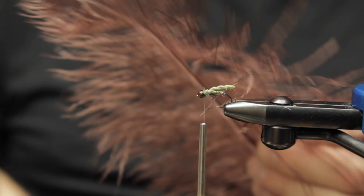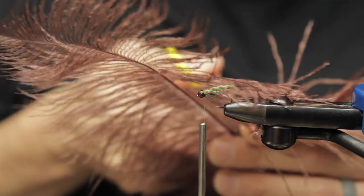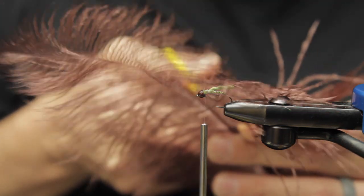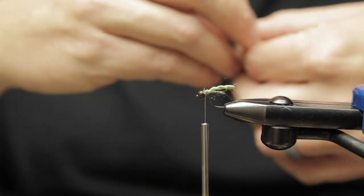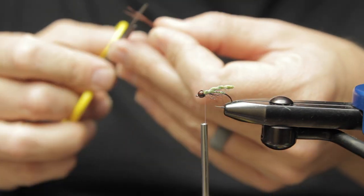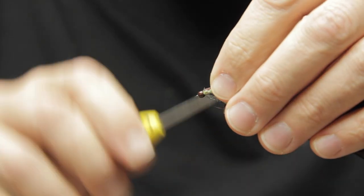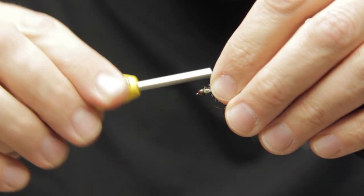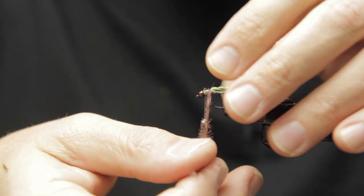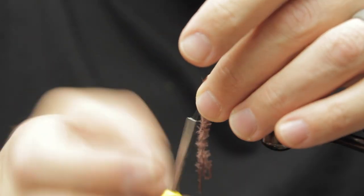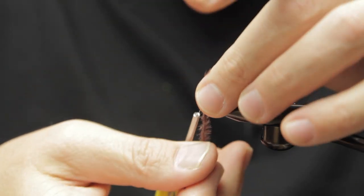A little bit of ostrich herl. I like using synthetics, but I also love having some natural stuff on flies a lot of times. So I'm just going to trim the tips and tie those in. The ostrich that I'm using is just stuff I'm not using for intruders or other steelhead flies.